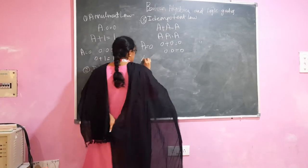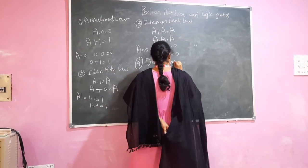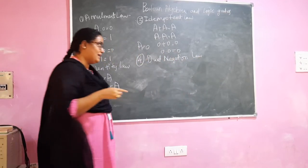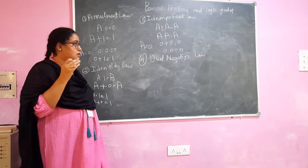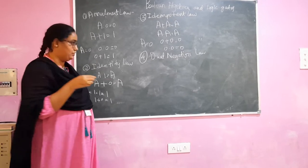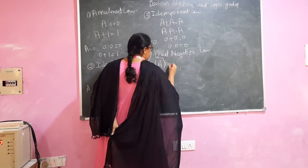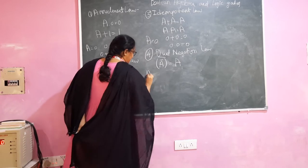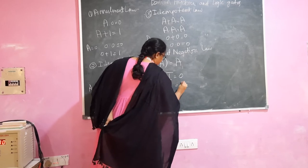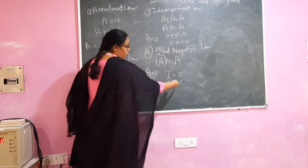Next we will see the double negation law. This law states that when a variable is complemented twice — that is, once the complement is taken and again its complement is taken — then we get the same variable. For example, if A is equal to 1, one complement would be 0, again 0 complement would be 1. So we again got the same value 1.